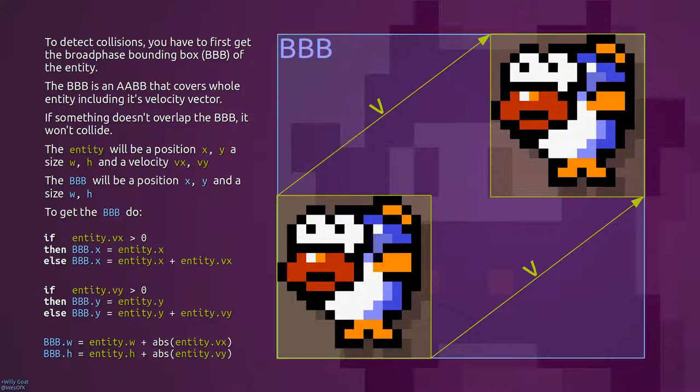To get the broadphase bounding box, you first have to check if the entity is moving left or right. If it's moving to the left, you set the broadphase bounding box's position to the entity's position plus its velocity. If it's moving to the right, you just set its position to the entity's position. The same thing applies for the y-axis.